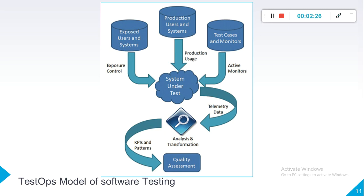The second approach is the production user and system, in which we use continuous dynamic monitoring tools like Kibana and Crashlytics. We watch our production environment and collect data through these tools, which display data in the form of charts and tables.